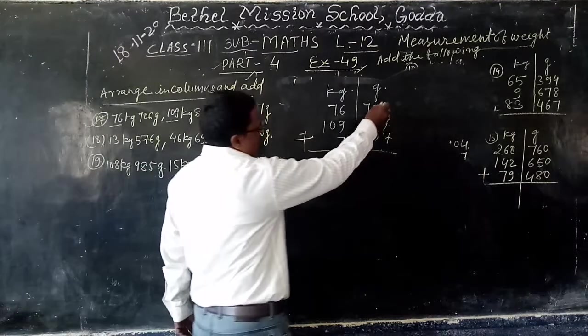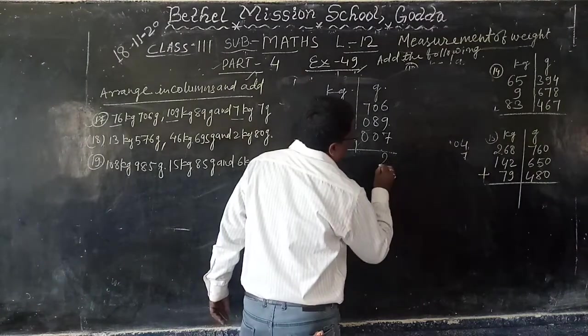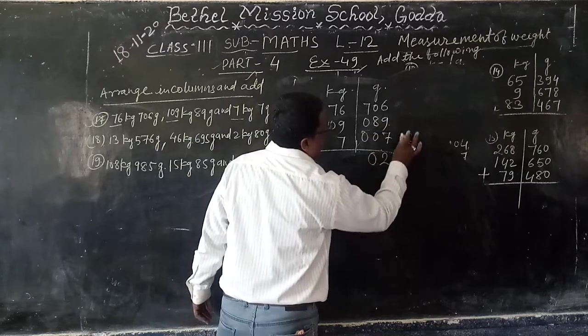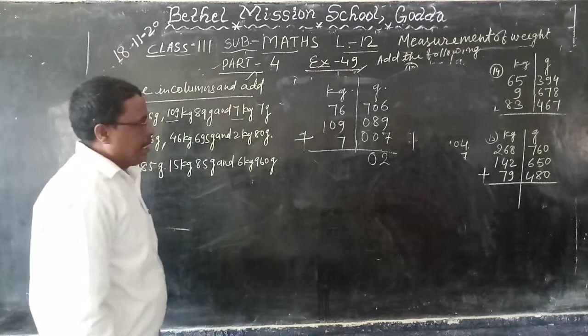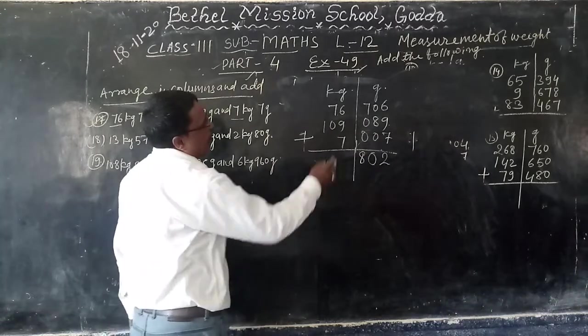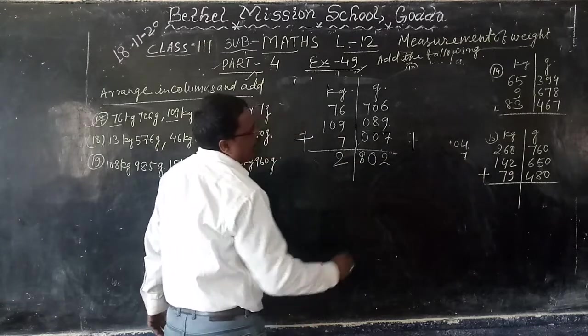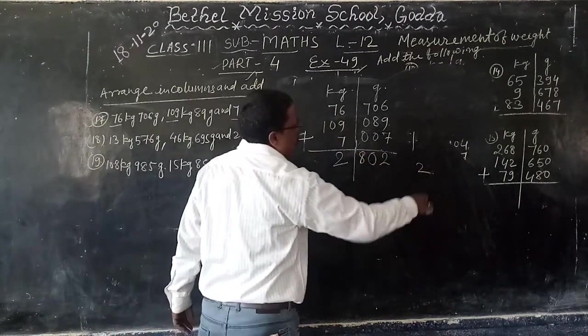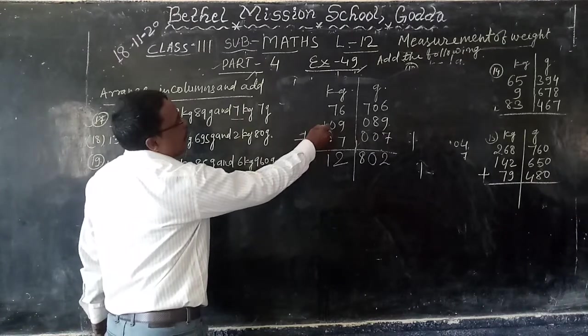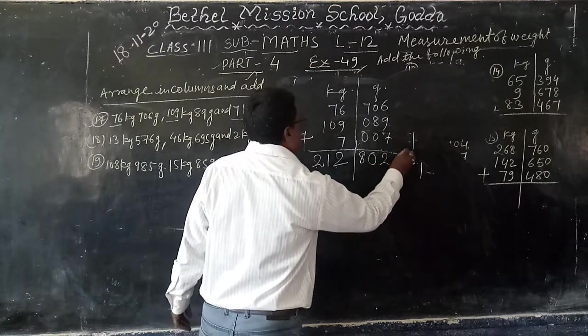6 plus 9, 15, plus 7, 22. 2 right, 2 in hand. 0 plus 8, 8, plus 2, 10. 0 right, 1 in hand. 7 plus 0, 7, plus 1, 8. 9 plus 6, 15, plus 7, 22. 2 right, 2 in hand. 0 plus 7, 7, plus 2, 9. 1 right, 1 in hand. 192 kg, 802 gram. Answer.